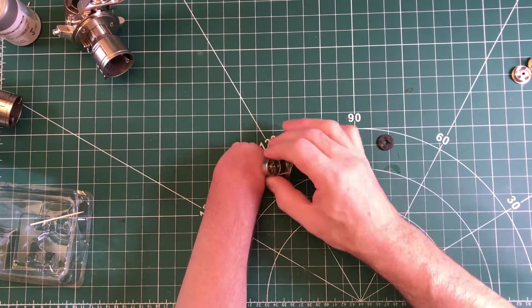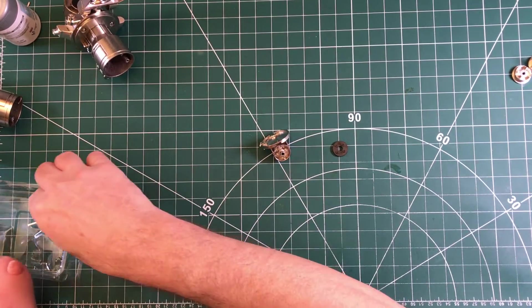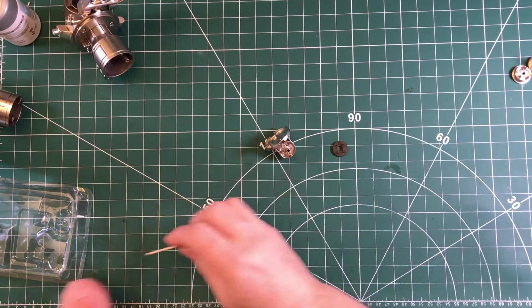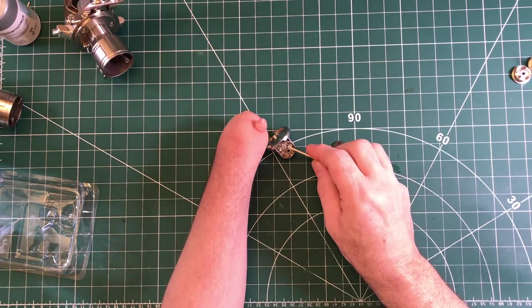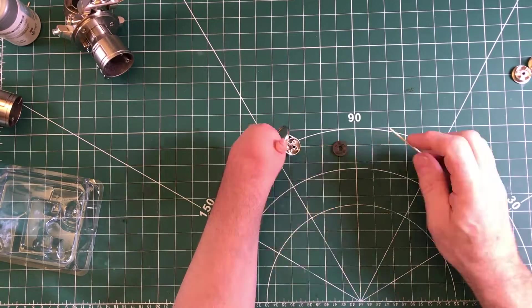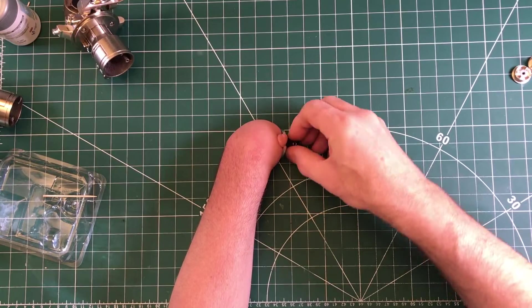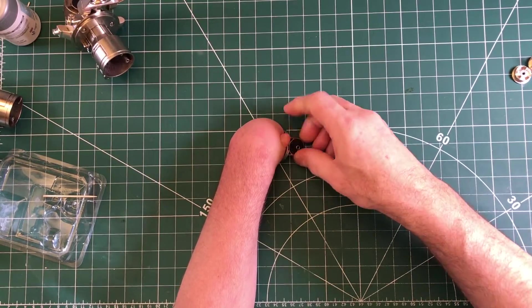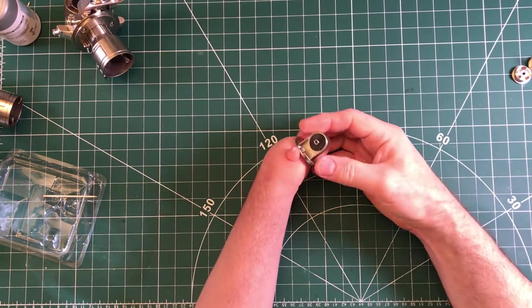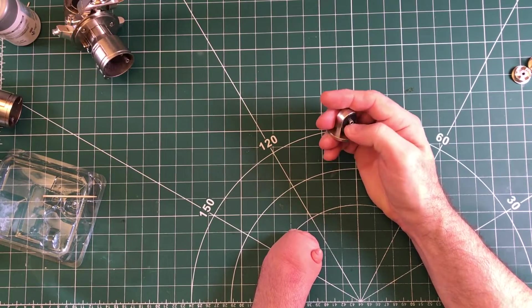Okay, so the first part of the build is we need to secure this black part to this metal part with the super glue. And it says to glue the raised lugs on the black part. Once completed, that part will look like that. That's step 1 and 2.